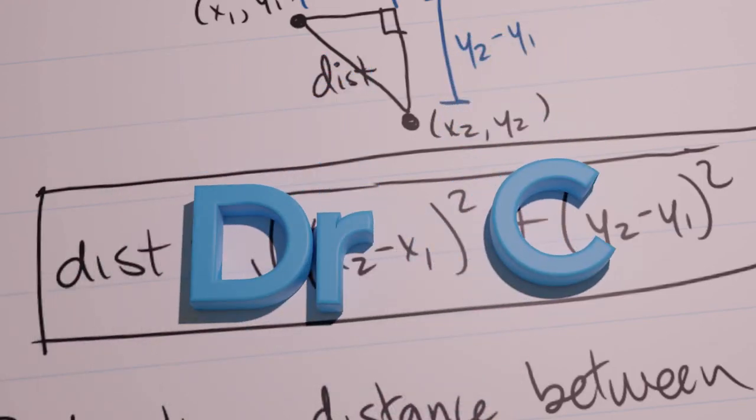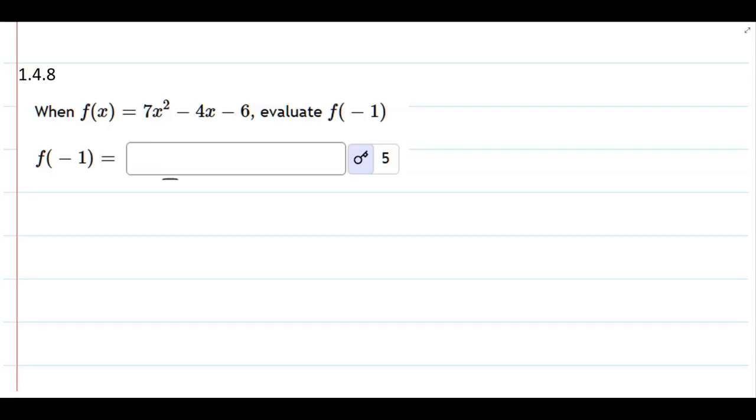So this problem we're given a function. My function is f of x equals 7x squared minus 4x minus 6.